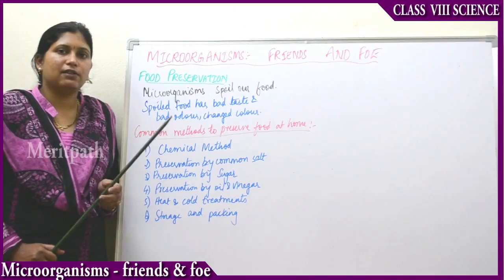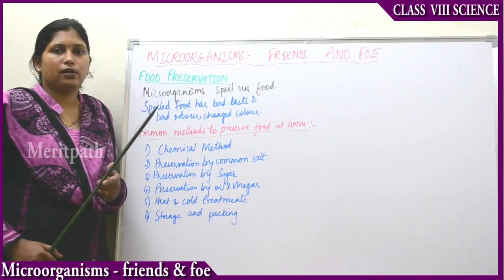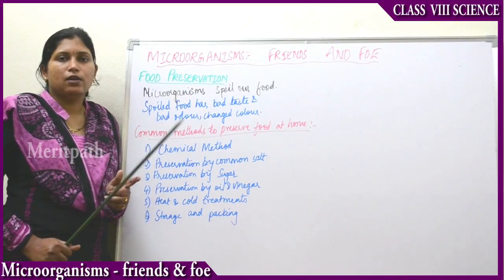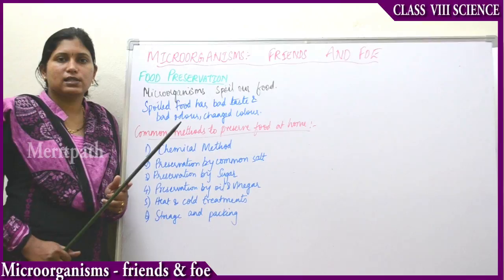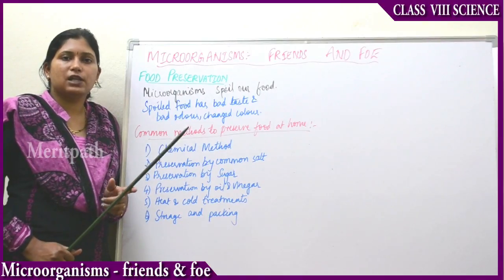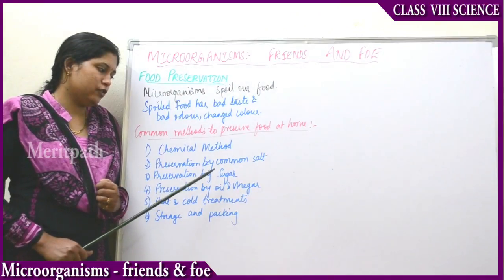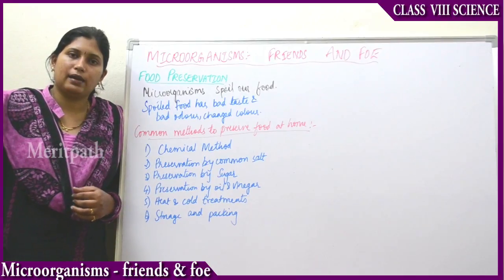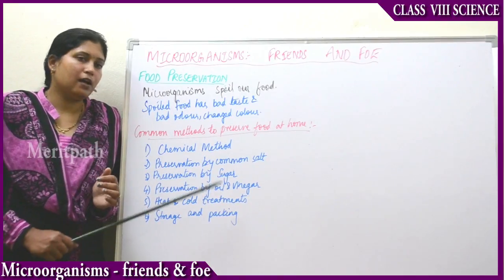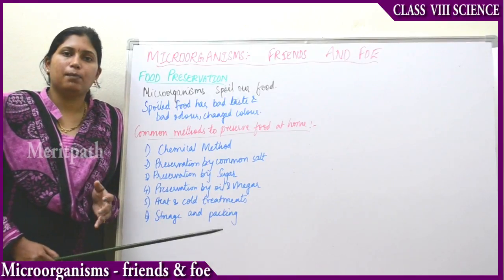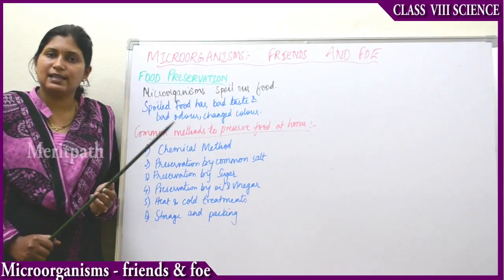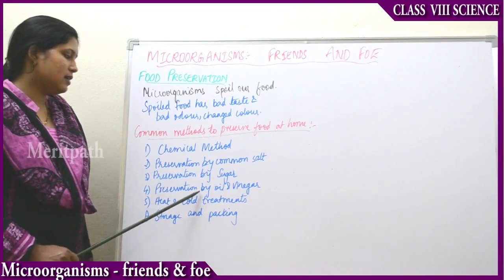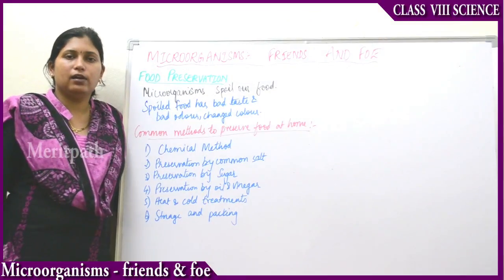Next is preservation by sugar. Jams, jellies, and squashes are all preserved with the help of sugar. Sugar inhibits the growth of bacteria, and that is the reason jams, jellies, and squashes are preserved with the help of sugars.